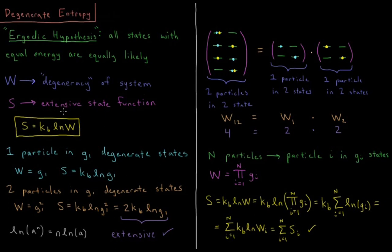S is extensive, so two particles should have twice as much entropy. If we have two particles in G1 degenerate states, the degeneracy of that system is going to be G1 squared. So the entropy of that is going to be Kb times natural log of G1 squared. But the natural log of A to the X is X natural log of A. So that would be two times Kb times log of G1.